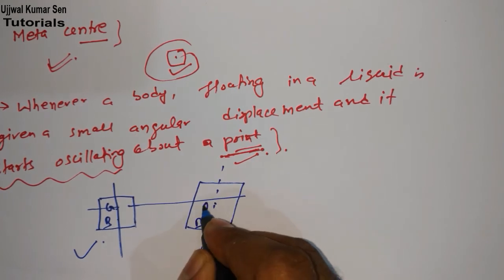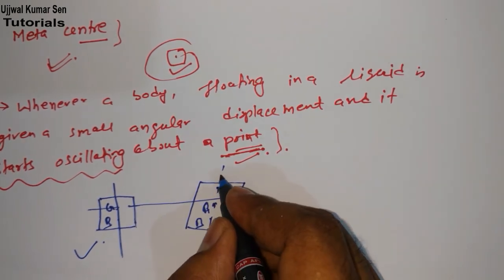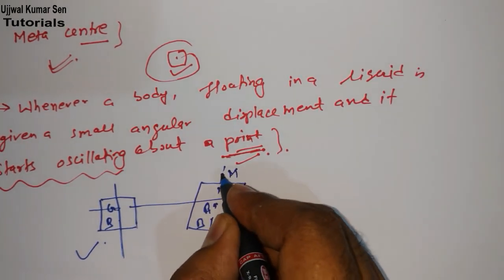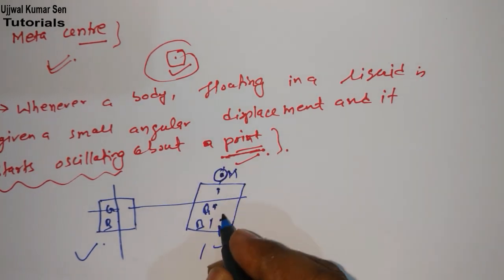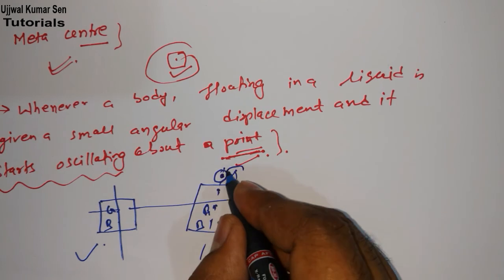The buoyancy point will change. The buoyancy point will be here—this would be B1 let's say. And metacenter, suppose that here would be a point, and about that point this body will start oscillating. And this point is known as metacenter.